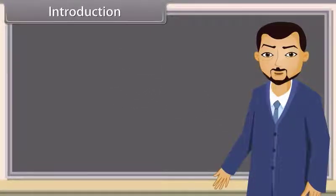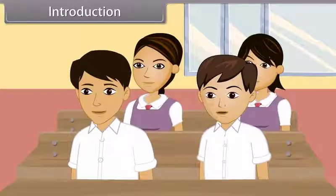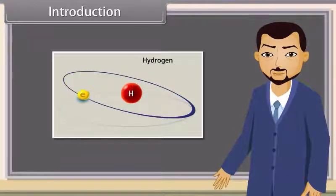Students, now we are going to know about the thing by which matter has been created. Can anyone of you tell me the name of that particular thing? Yes, you, Raoul. Sir, it is atom. Absolutely right. Atom is the smallest thing by which matter is made. Now let us study further to know more about atom.